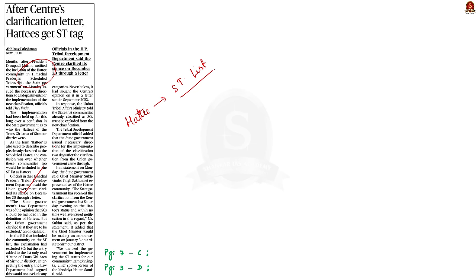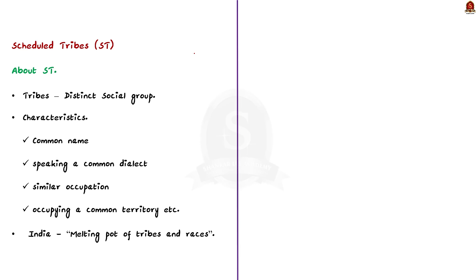In this context, we will know the basic process of including a tribe under the Scheduled Tribe list. Before entering the discussion, let us see some basic facts about Scheduled Tribes. Tribes are a social group with similar characteristics. They share a common name, speak a common dialect, have similar occupation, and occupy a common territory.